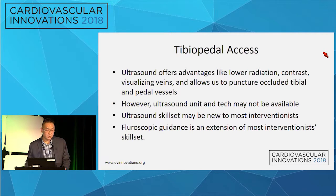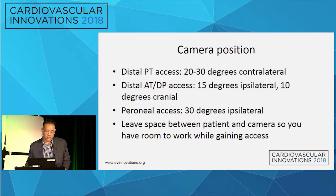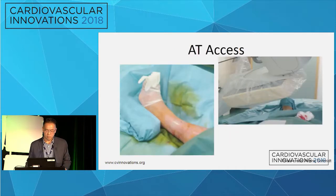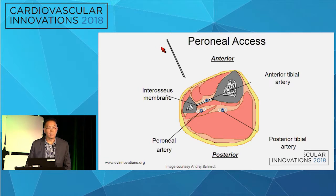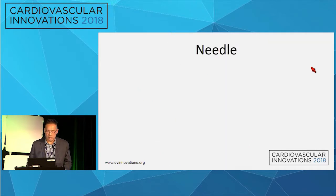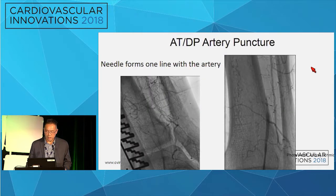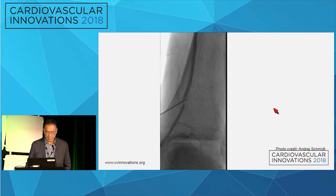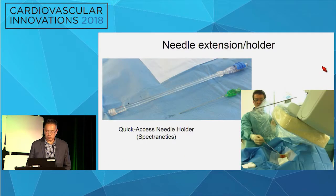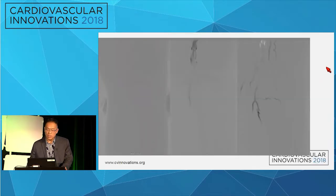On fluoroscopic guidance - because sometimes you don't have an ultrasound tech or the skill set - the camera position is very similar to where your ultrasound beam would be. Here's an example of anterior tibial access, posterior tibial access, and peroneal access. Anterolateral, you put your camera about 23 degrees ipsilateral, come down, separate the tibia and fibula, inject contrast, and come down through the interosseous membrane into the peroneal artery. You want to keep your needle parallel, inject contrast, push it down into the vessel. If you don't see blood, you can move the camera orthogonal, see that you've gone past it, come back, and pass your wire.